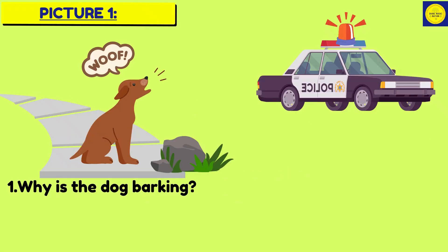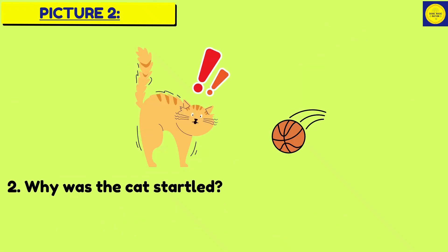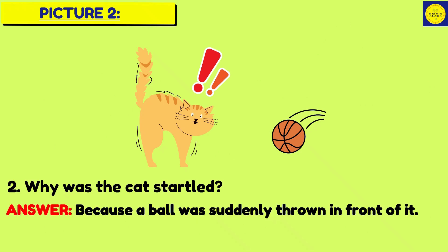Here we have another set of pictures. Why is the dog barking? The dog is barking because it got startled by the sound of the siren coming from the police car. Why was the cat startled? Because a ball was suddenly thrown in front of it.